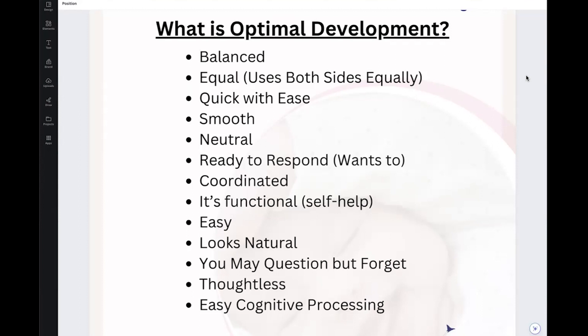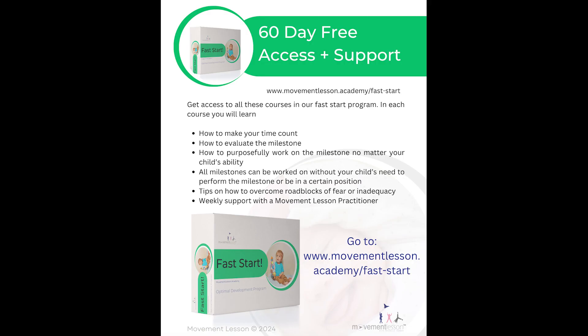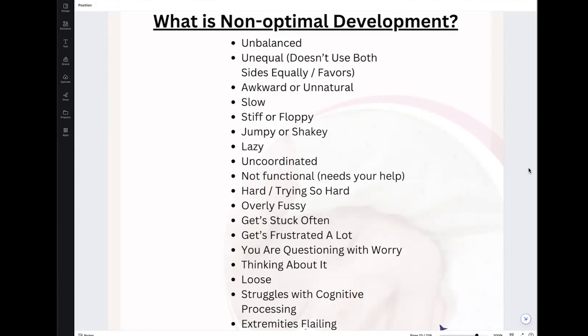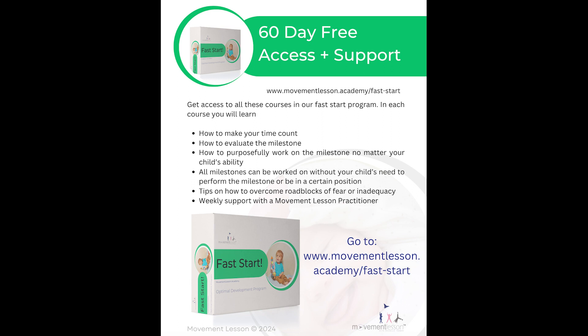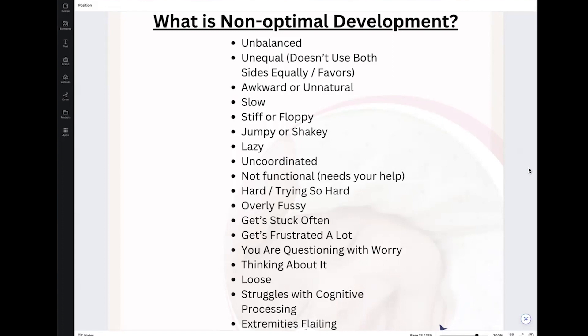So they have optimal development. Check the description for a link to our Fast Start Support Program — you'll get 60 days free to just try it out. Start at the beginning of development, start at sleeping and lying down. Even if your child is older and walking, these milestones all repeat on each other. To get higher milestones, you have to work on the foundations and make them stronger. Sleeping and lying down — that's working towards walking, towards much more advanced skills. Don't think just because your child is older that you've missed these skills. You always have to go back to the foundations, back to the basics.